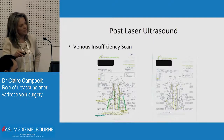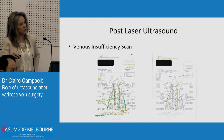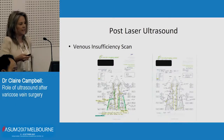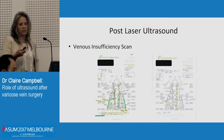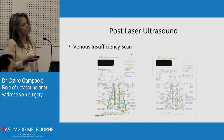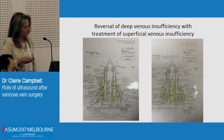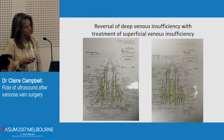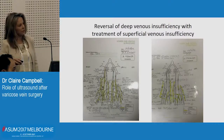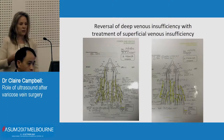Then we do a venous insufficiency scan. The reason I started staging the procedures is that we found a lot of the tributaries would go back to normal without treatment, so they need less injections. Injections are a high-risk treatment and not as successful, so if you can minimise injections, it's better. Don't be surprised to see reversal of deep venous insufficiency in patients who had it pre-treatment — this patient's just had laser, no other treatment, and a lot of the deep insufficiency's gone back to normal.